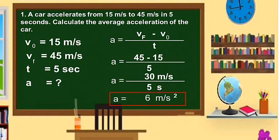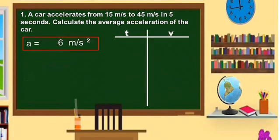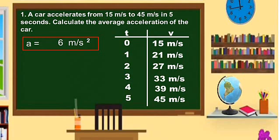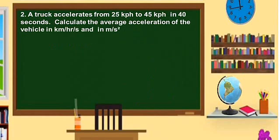That is the answer. It means that if this car is accelerating at 6 meters per second squared, at 0 seconds we have 15 meters per second. In 1 second we have 21 meters per second, because you add 6. Plus 6, we have 27. Plus 6, we have 33. Plus 6, that will be 39 meters per second. And plus 6 is 45 meters per second. So in 5 seconds, the velocity is already 45 meters per second.